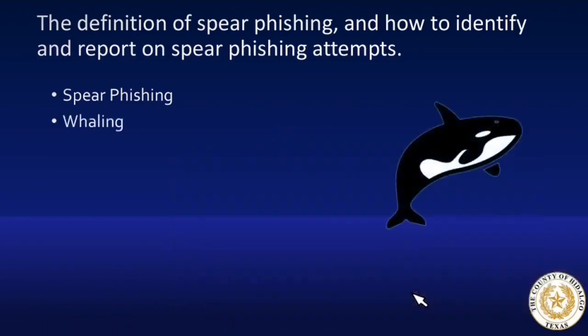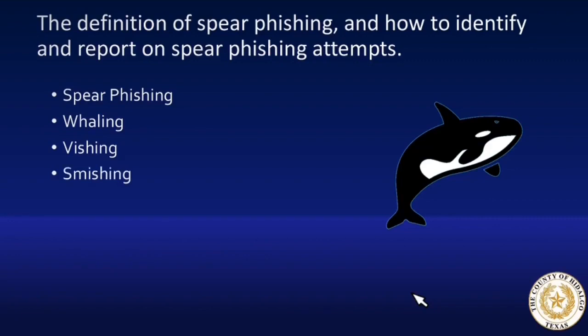Whaling is like spear phishing in targeting one individual — the difference being that the target is a high-profile person such as the CFO or president of an organization. Vishing is phishing through a call on the phone. It is a form of social engineering where a caller pretends to be the IRS and threatens you with legal action if you don't pay your dues over the phone. These criminals usually target the elderly or unsuspecting to take their life savings. Smishing is phishing through text. You may receive a text with a link stating they have your shipment ready to be delivered — click here. Don't do it. If you don't know them, delete.